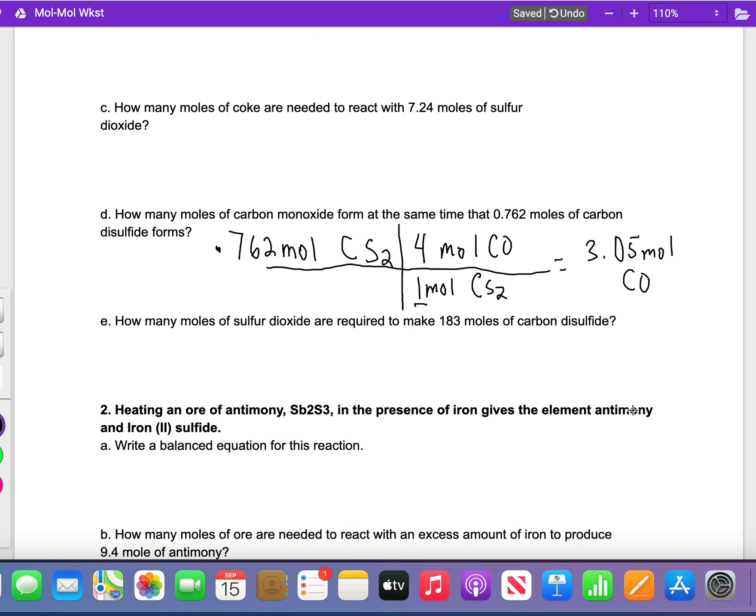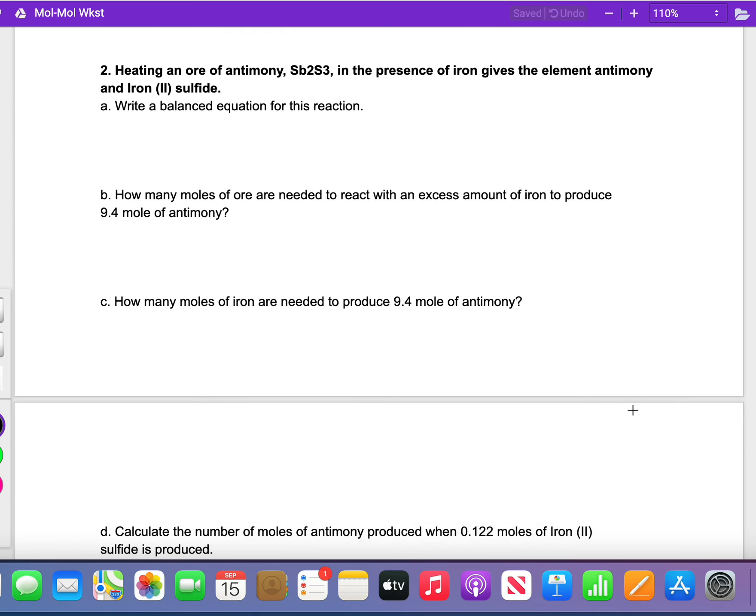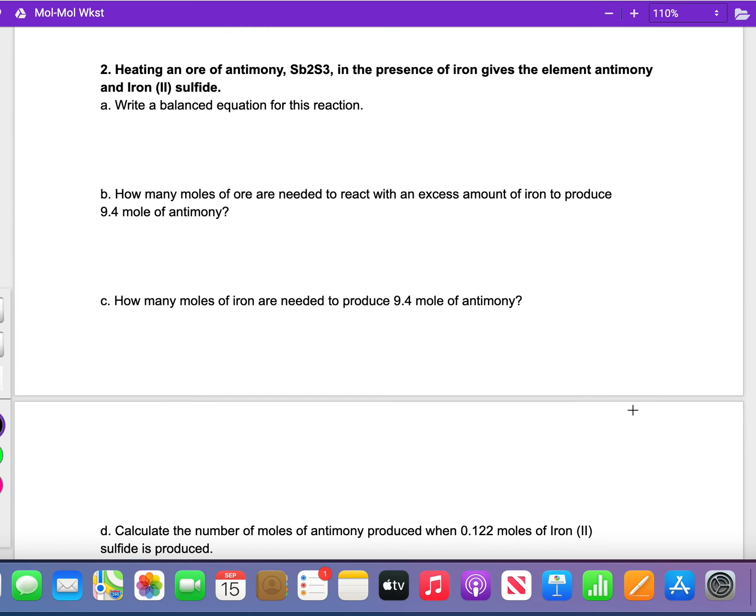Now I'm going to help you get the equations for number 2 and 3 because they are kind of tricky. Heating an ore of antimony, which is Sb2S3, in the presence of iron, that's Fe, gives the element antimony. This is a single replacement equation: antimony and iron(II) sulfide, which is Fe2+ and sulfide is 2-, so it's just FeS.